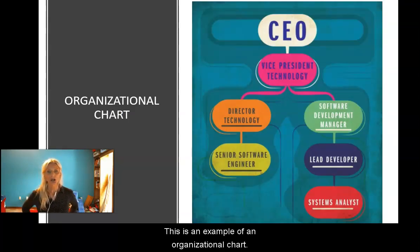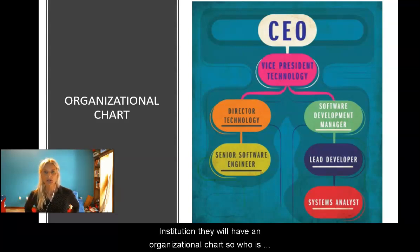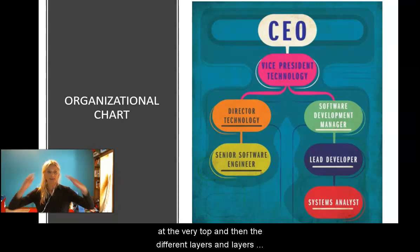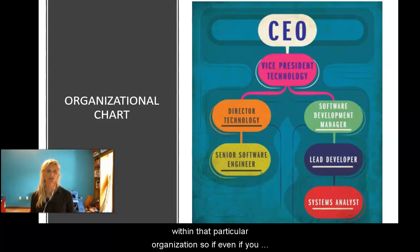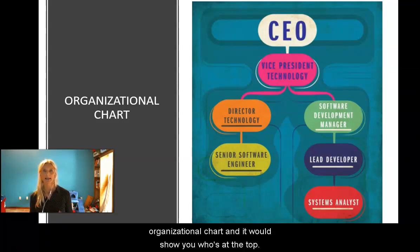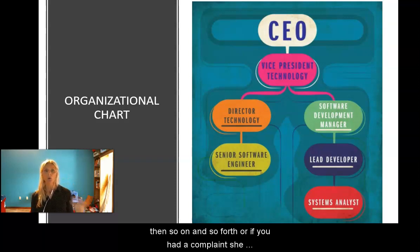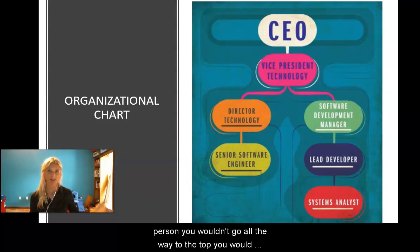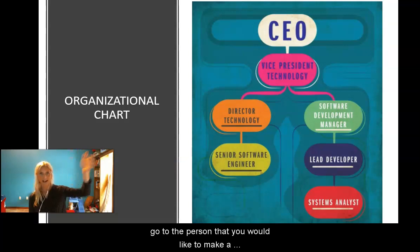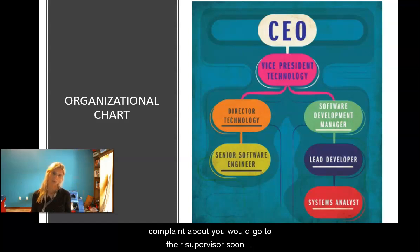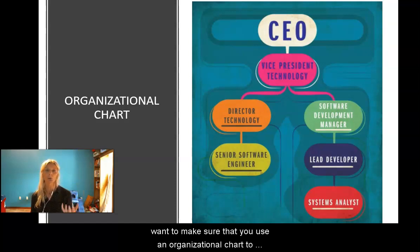An organizational chart is used at any institution to show the hierarchy — who is at the very top, the different layers within the organization. For example, at SCF, the handbook includes an organizational chart showing who's at the top, who's below them, and so on. If you had a complaint, you would look at the chart to find the right supervisor to go to — not all the way to the top, but to the appropriate person.